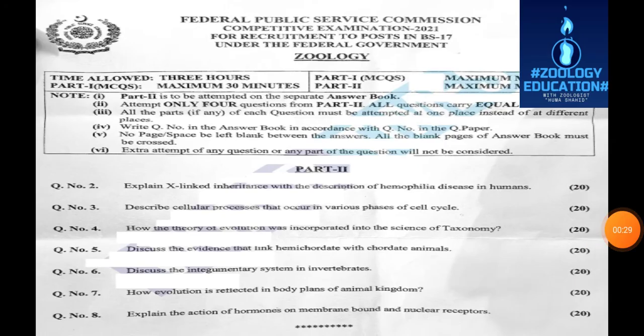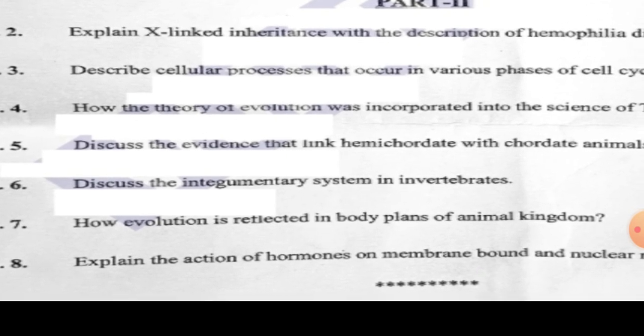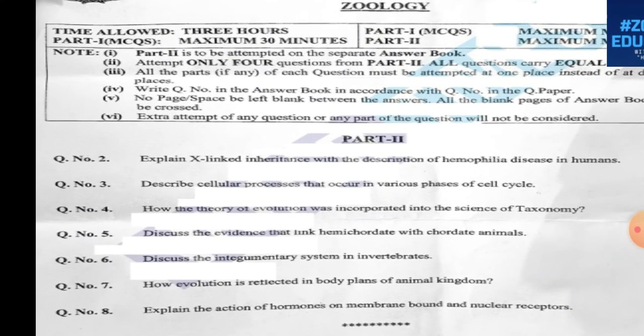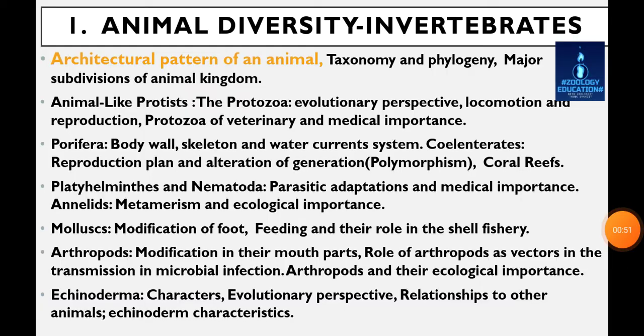Here is the sample of our exam paper. Question number 7: How evolution is reflected in the body plans of the animal kingdom is also about our first major category, in which we learn about the evolution of the animal kingdom. Let's start our first major category.